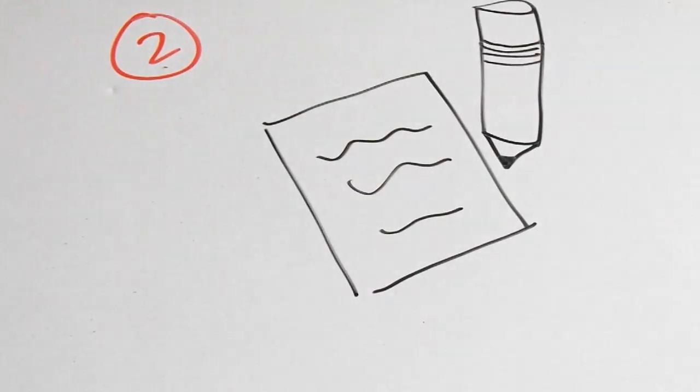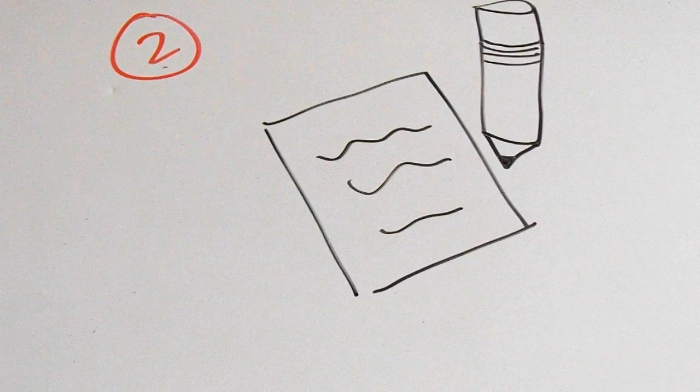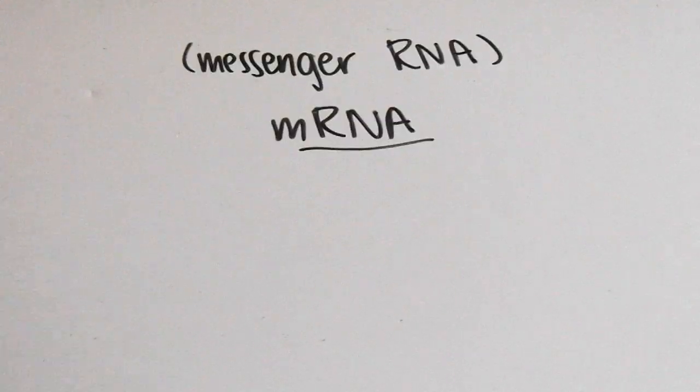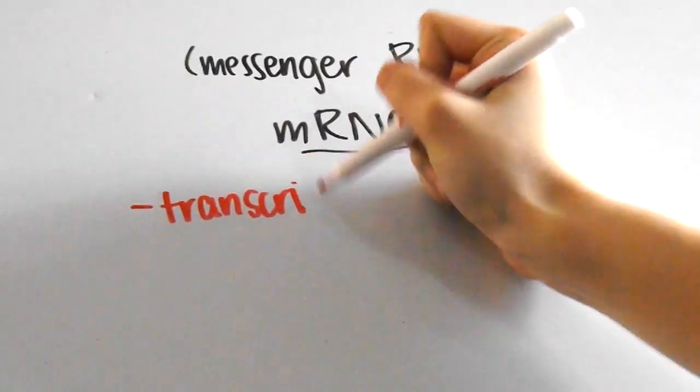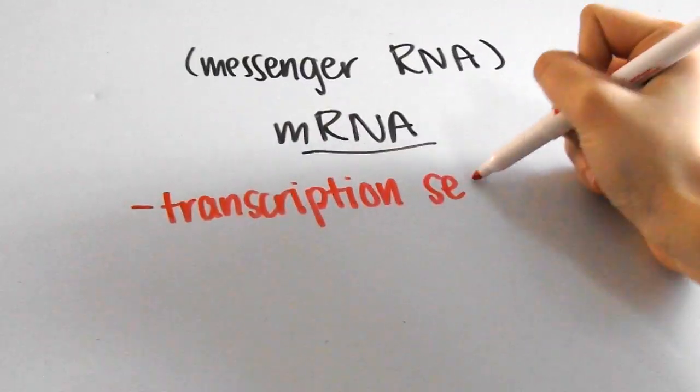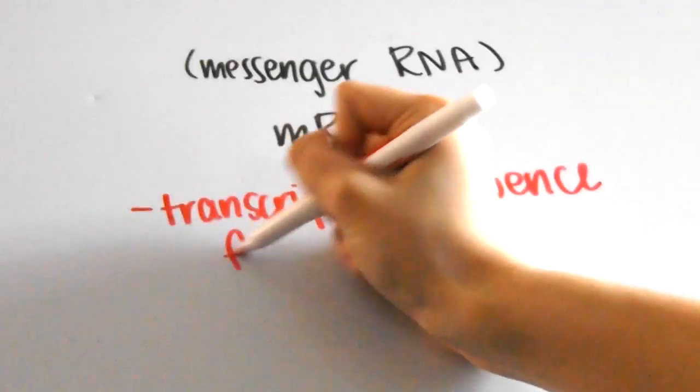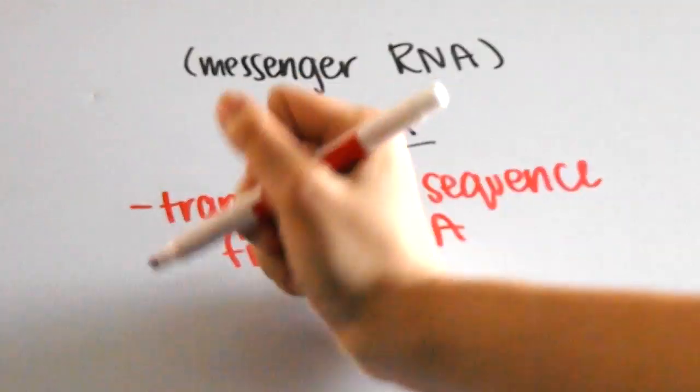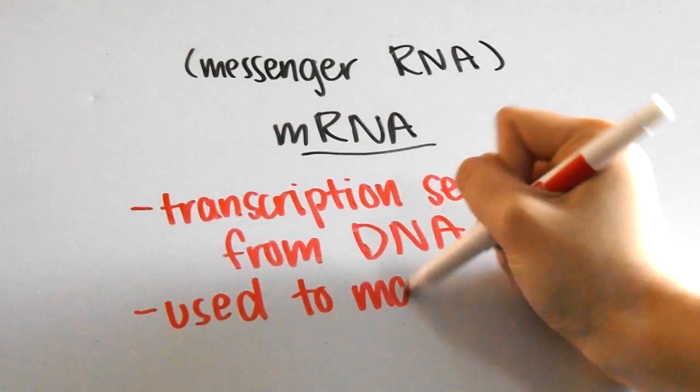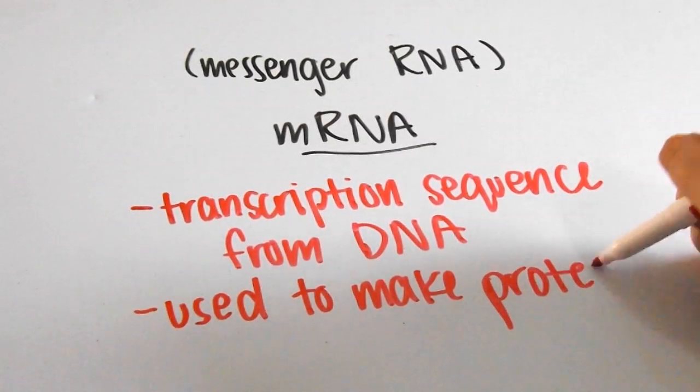Alright, the next thing you did was write the instructions down. In this analogy, you are playing the role of a molecule called mRNA, a type of RNA that stands for messenger RNA. In real protein synthesis, the mRNA is the transcription of the information from DNA into an RNA sequence, and that information is carried to actually make the protein somewhere else.